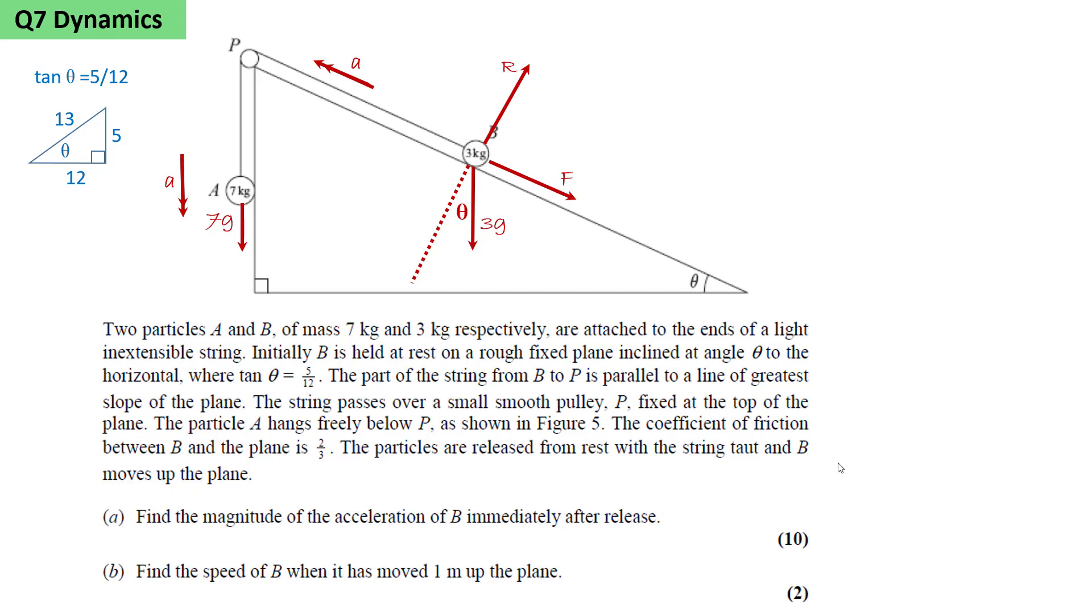The string passes over a smooth pulley P fixed at the top of the plane. Since it's a smooth pulley, the tension in the string either side of the pulley will be the same, so we mark this and denote it by T.